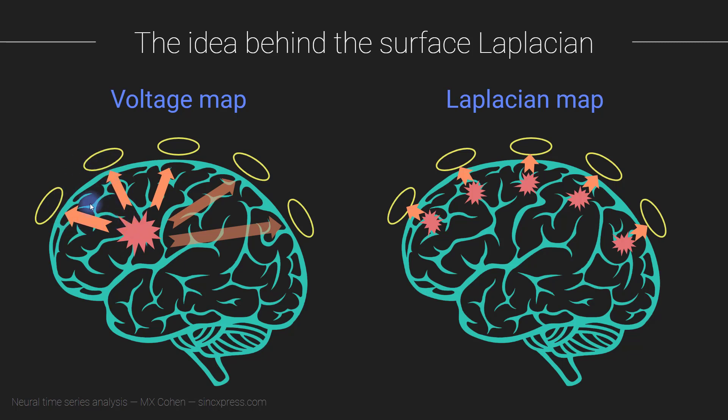Wouldn't it be nice, this is the idea of the Laplacian, if we can estimate the projections onto the electrodes that come from a single common source and remove those from the data, filter it out of the signal. If we could do that, that would mean that each electrode is no longer sensitive to these deep sources that are projecting everywhere. Instead, each electrode is mainly sensitive to the activity, the neural activity, directly underlying or coming from tissue directly underneath that electrode.